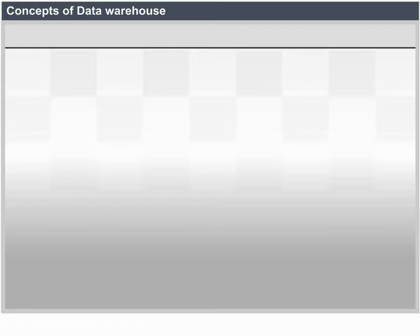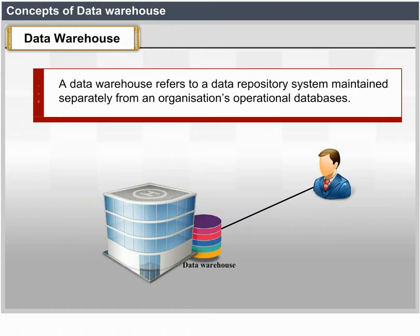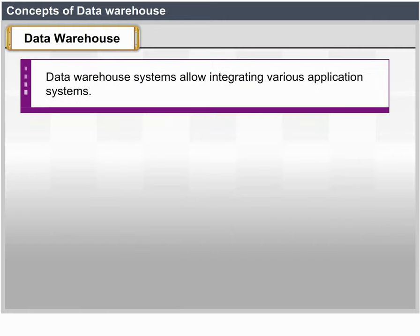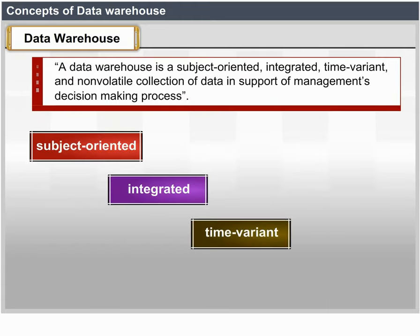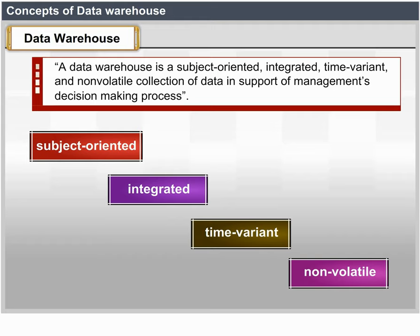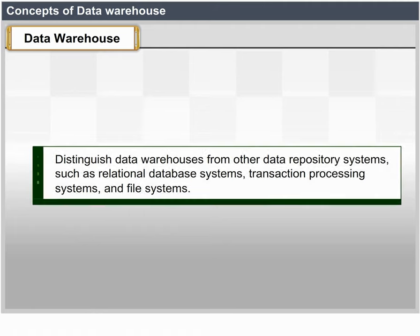A data warehouse refers to a data repository that is maintained separately from an organization's operational databases. Data Warehouse systems allow for integration of a variety of application systems. They support information processing by providing a solid platform of consolidated historic data for analysis. A data warehouse is a subject-oriented, integrated, time-variant and non-volatile collection of data in support of management's decision-making process. These four keywords distinguish data warehouses from other data repository systems such as relational database systems, transaction processing systems and file systems.